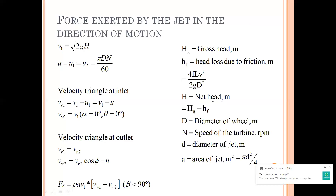In problems, the net head H can be given directly, or they can give you the gross head and some loss, or values of l, d, etc., or losses in terms of your gross head. Capital D is your diameter of the wheel or runner, N is the speed of the turbine in rpm, and small d is the diameter of the jet. Knowing small d I can calculate small a — the area of the jet.